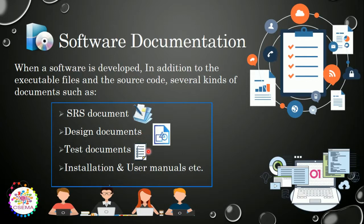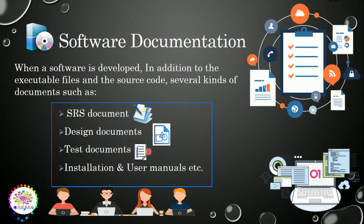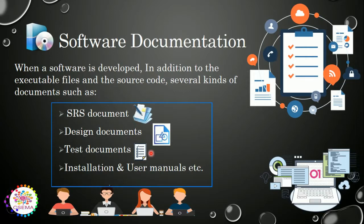The third type is the test document. Test documents are used during the testing process. Testing is a process used to check whether the software meets the customer requirements or not. These documents help testers to easily test and eliminate errors from the software system that might cause failures.